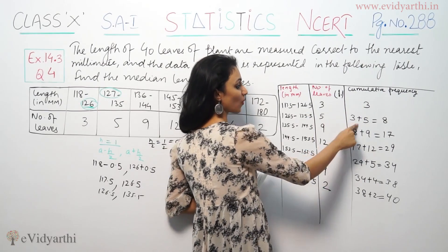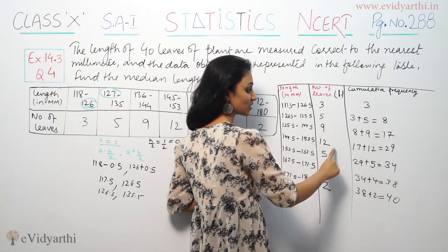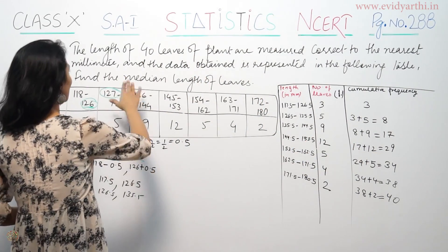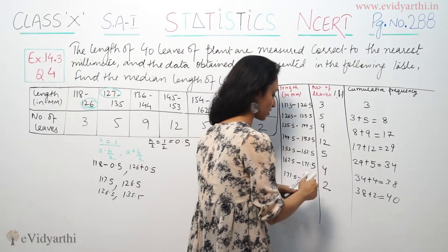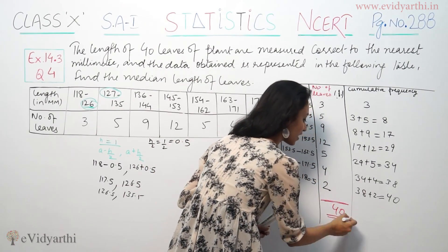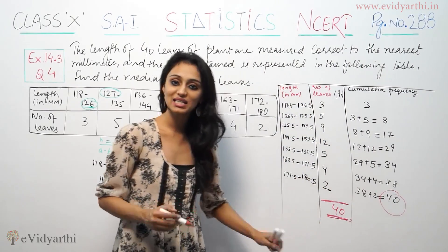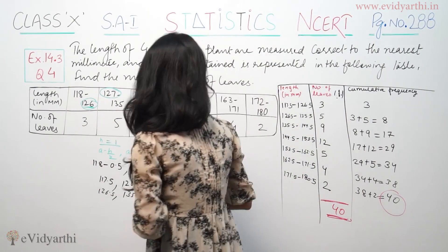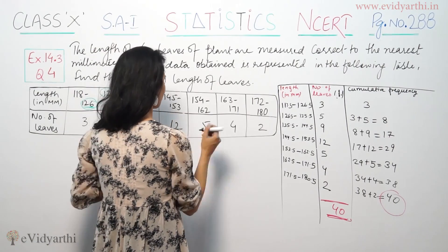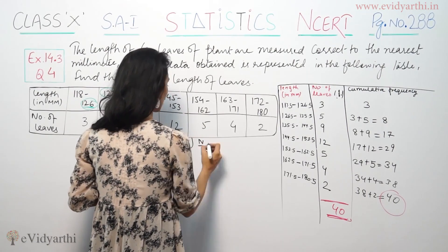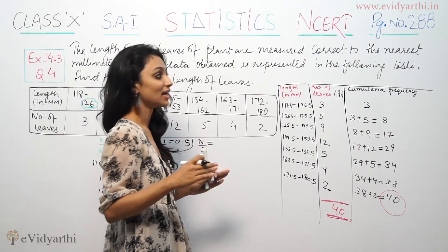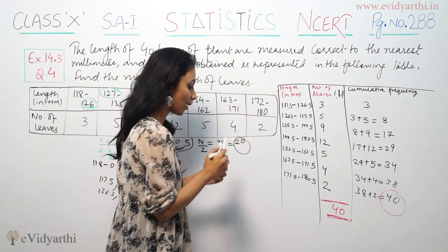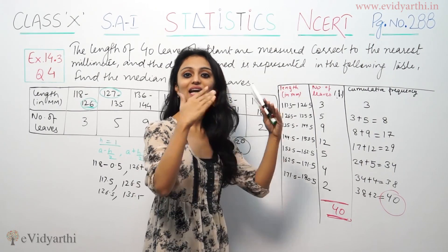So the total number of leaves is 40. Now the formula for the median class uses n by 2. Here, n by 2 means 40 divided by 2, which equals 20. Now we look for the just-greater cumulative frequency value. Looking at the cumulative frequencies, 20 is first exceeded by 29.